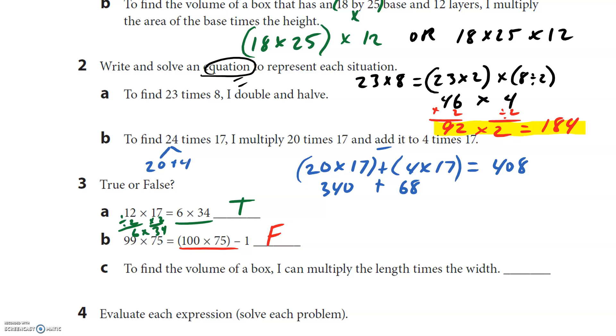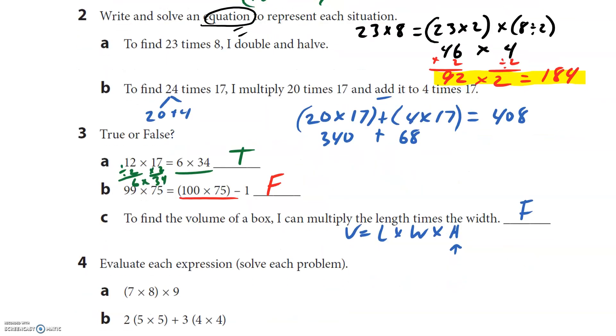To find the volume of a box, I can multiply the length times the width. Well, I'm just going to write it right here. Volume of a box equals length times width times... one last thing. False. Need the height. You have to have the height.